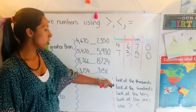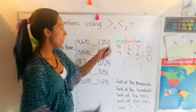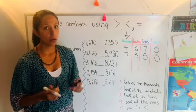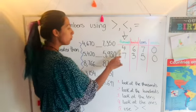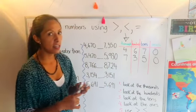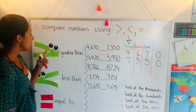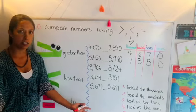We are going to look at the first digit, in this case the thousands. Well what number is greater, four or seven? Of course seven, so the alligators will always eat the largest number.